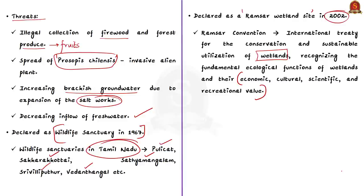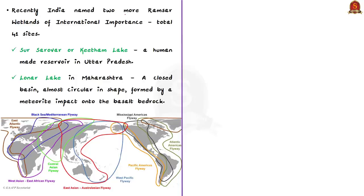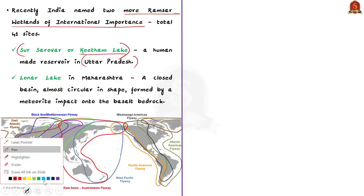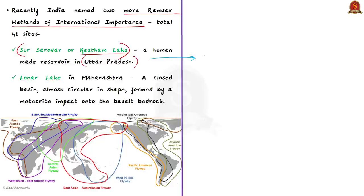The first newly added Ramsar site is Sur Sarover, commonly known as Keetam Lake. It is a human-made reservoir in Uttar Pradesh and is important for bird species which migrate on the Central Asian Flyway. Sur Sarover is known for the visit of over 30,000 water birds annually. This brings us to the topic of flyways — the routes followed by migratory birds on their journeys between their breeding and wintering places.